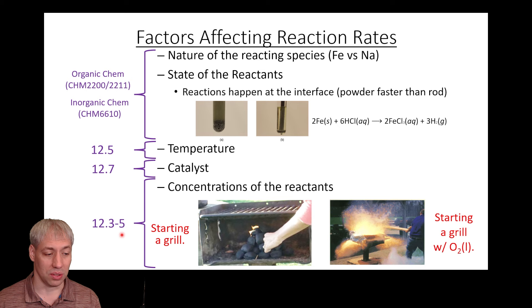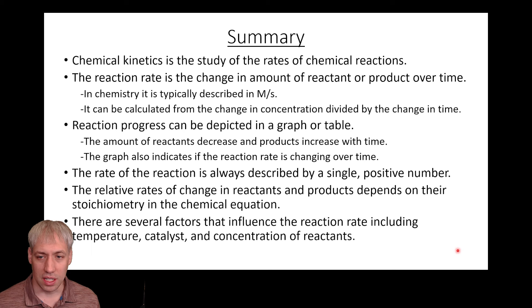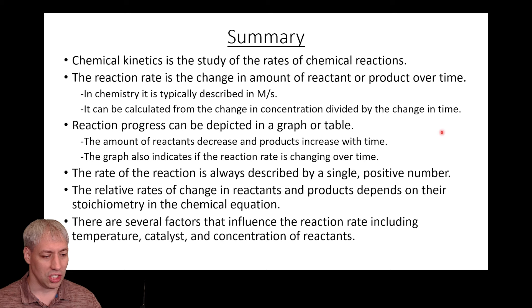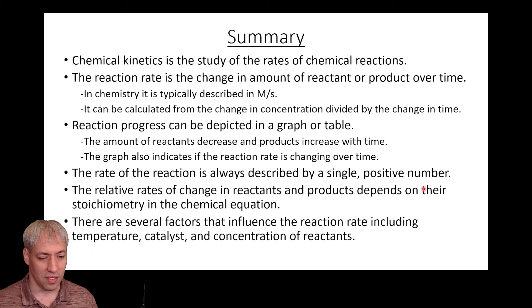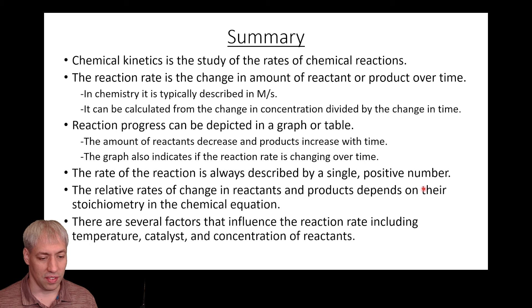In summary: we've defined chemical kinetics and reaction rates as molarity per second. We graphed concentration data over time and found the relationship between rate and changes in concentration — including the negative and positive sign conventions and stoichiometry. We also listed factors that influence reaction rate: temperature, catalysts, and concentration, which we'll dive into when we cover rate laws in the next presentation.